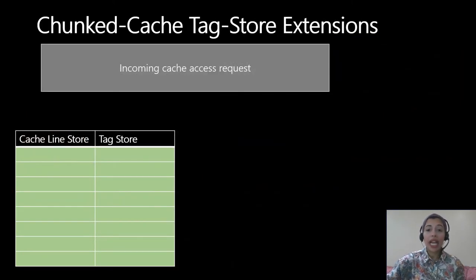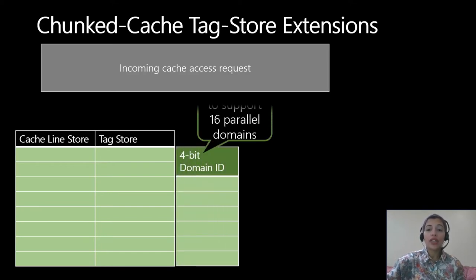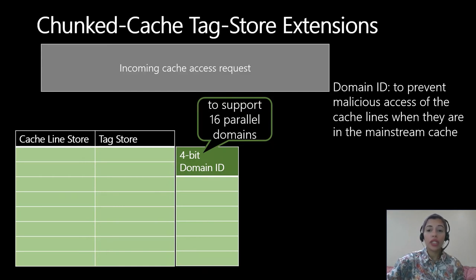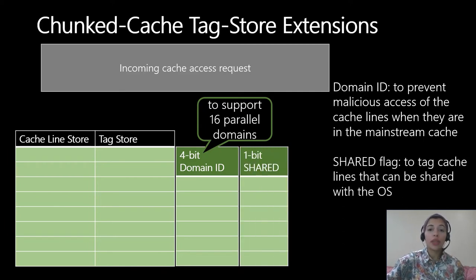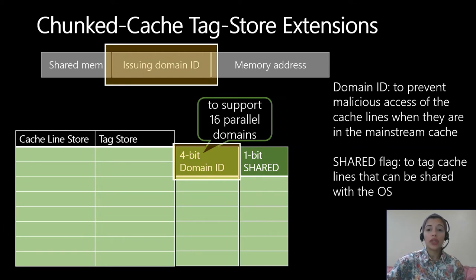To support these features, the cache tag store and incoming cache access requests must be extended. For every cache line stored, its owner domain ID is stored in the tag store, validating that only the owner domain accesses its cache lines when the mainstream cache is shared. One additional bit tags cache lines that can be shared with the OS. Every incoming cache access request is extended with the issuing domain's ID to check against the owner ID, and whether it is an access to a shared memory region is also indicated so the cache controller can handle it accordingly.